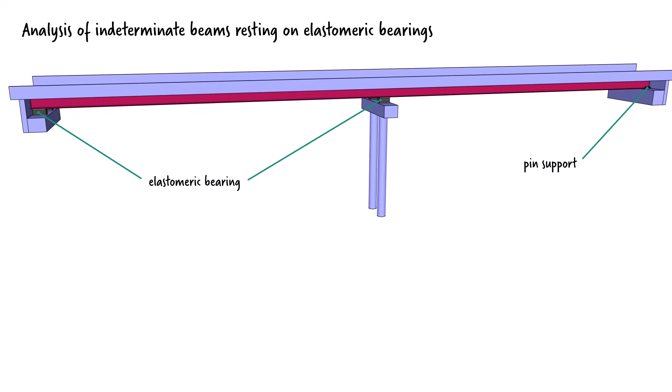While the pin support prevents vertical displacement, the elastomeric bearings deform slightly under the downward load. This slight settlement at the bearing locations causes a small but measurable shift in the distribution of the bending moment across the structure.